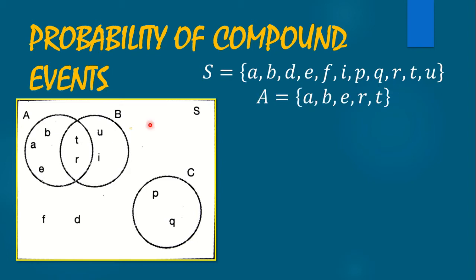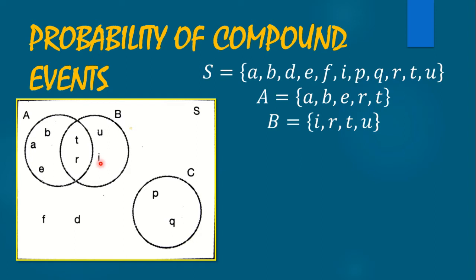For event A, we have the outcomes A, B, E, R, and T. Then for event B, we have the outcomes I, R, T, and U. For event C, we have P and Q.